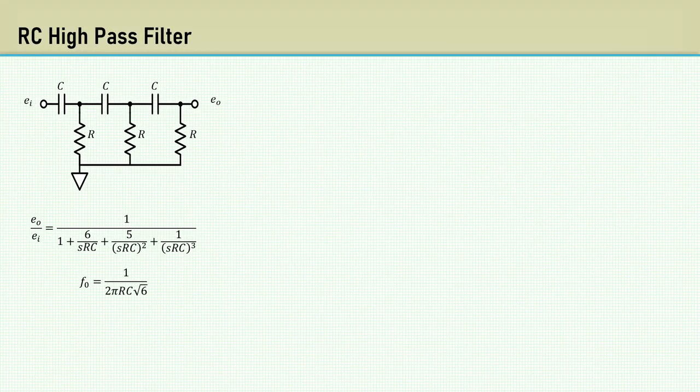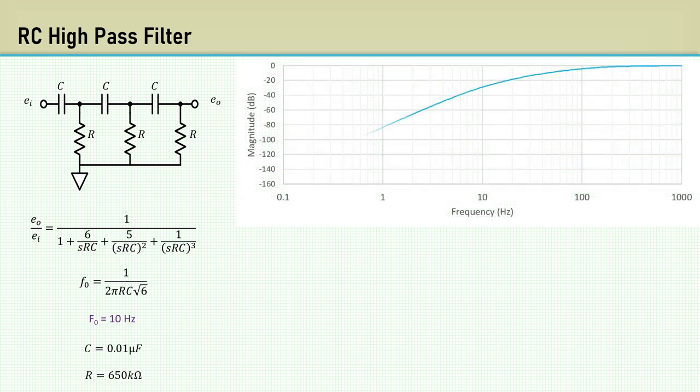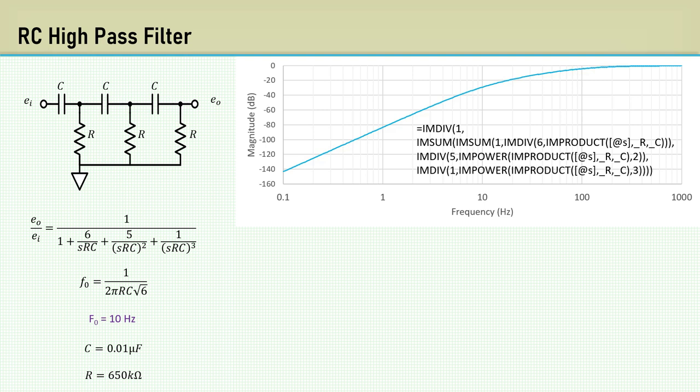I put the transfer function in Excel. The components I selected were for a 10 Hz oscillator, which is 0.01 microfarad capacitors and 650k resistors. Here's the magnitude response and the associated Excel transfer function formula. Notice the magnitude at 10 Hz is the minus 29.25 dB that we expected.